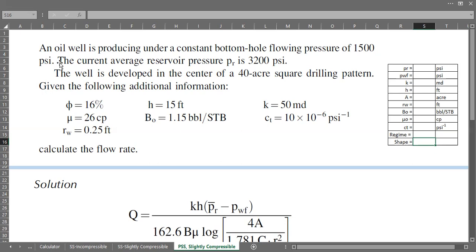This is our case: an oil well is producing under a constant bottom hole flowing pressure of 1500 psi and the current average reservoir pressure is 3200 psi. The well is developed in the center of a 40-acre square drilling pattern.